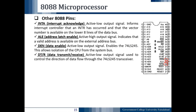The next pin is DT/R bar — Data Transmit and Receive — which is pin number 27. It is active low for the receiving mode and active high for the transmission mode. It is an active low output signal used to control the direction of data flow through the 74LS245.